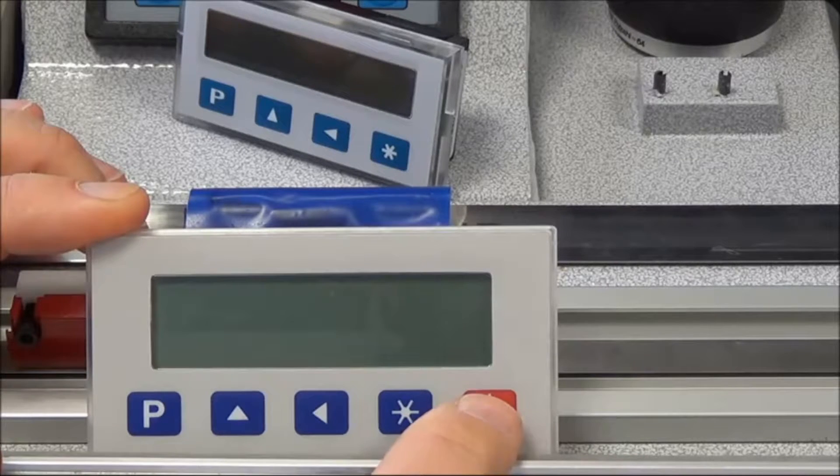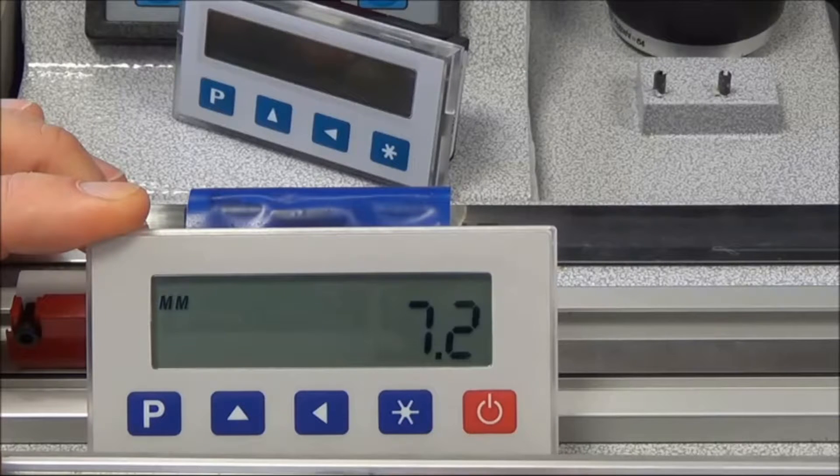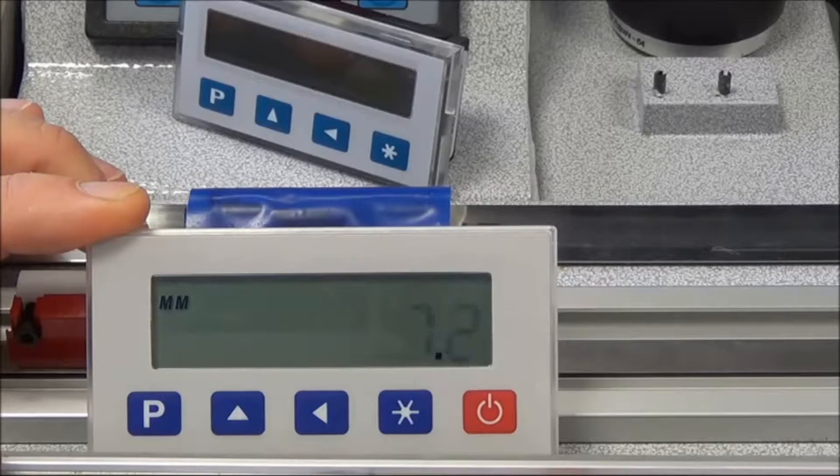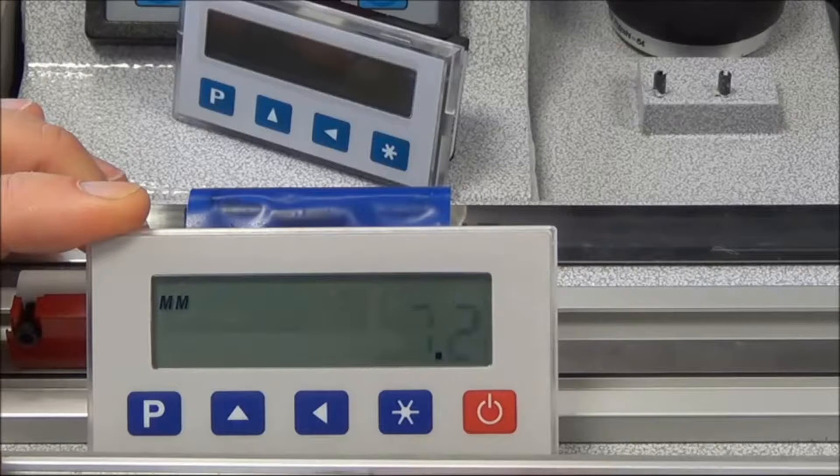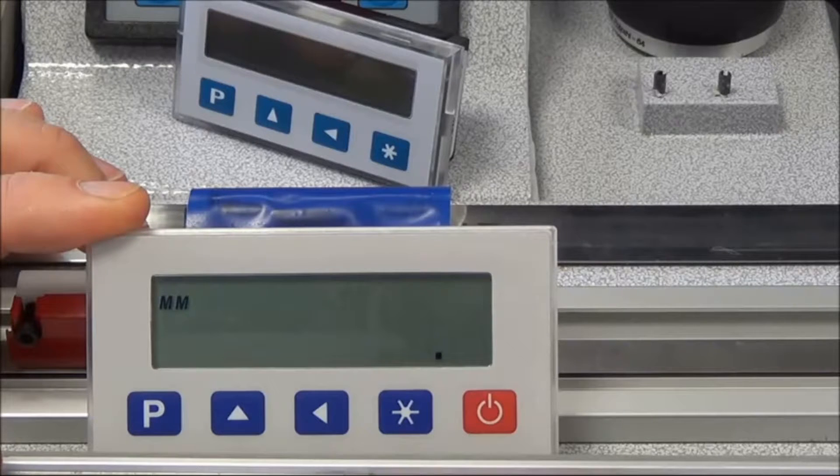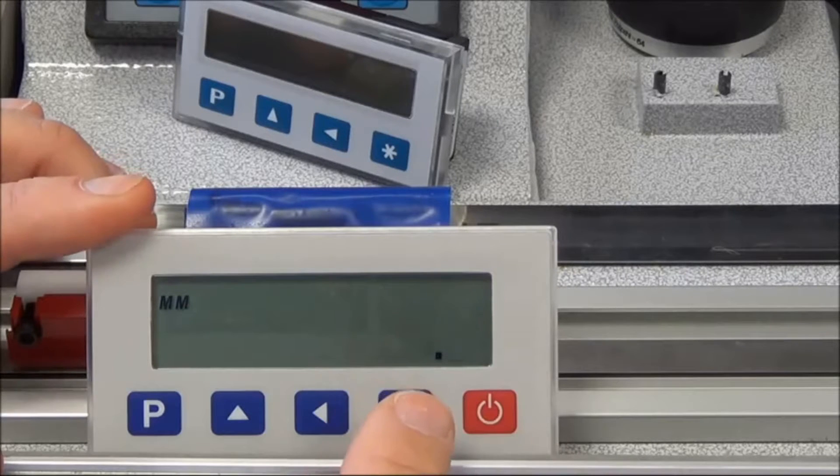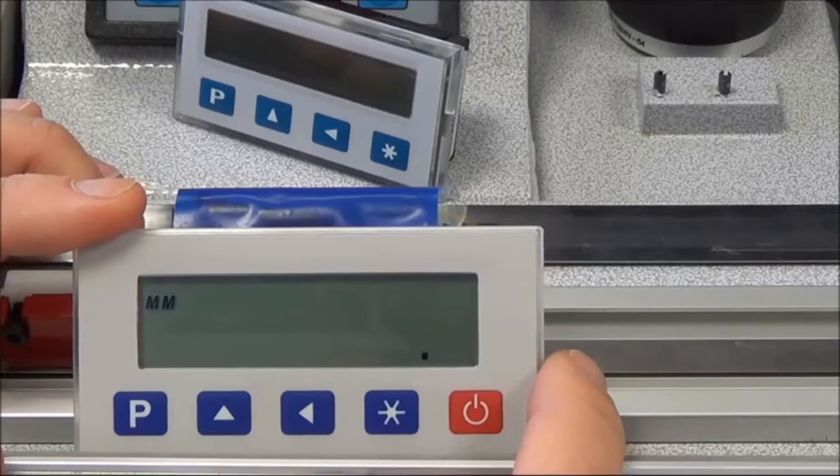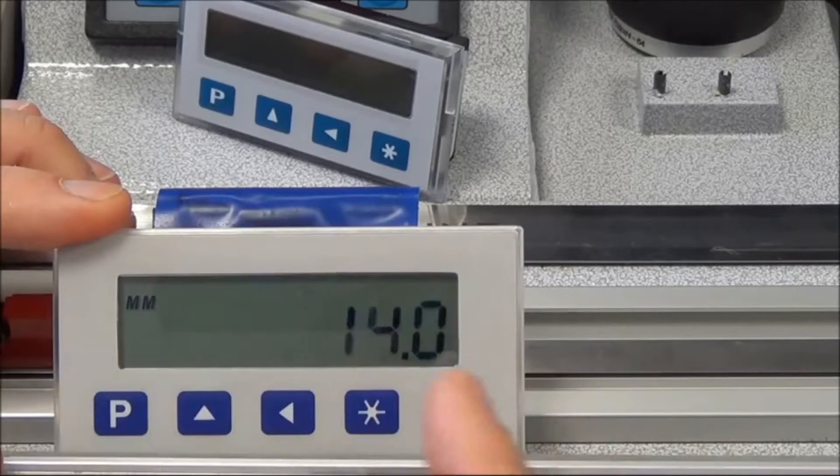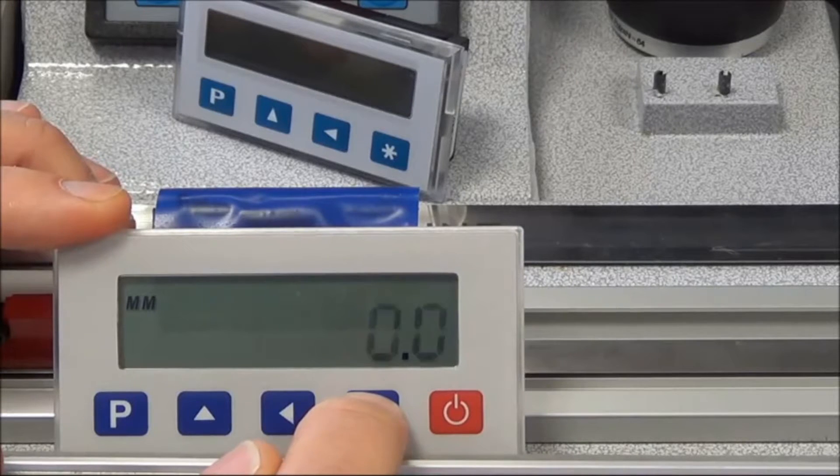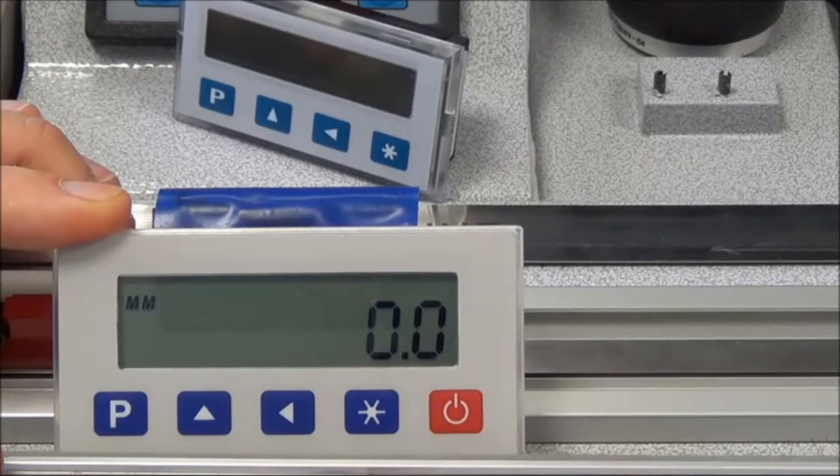When we switch the display on again, in this instance it's asking for the axis to be re-referenced because the operation of the machine means that movement might have taken place with the power being switched off. So to be sure, you must move the axis to a point where you know that is, for example the zero point, press the start button, and that is the axis reset.